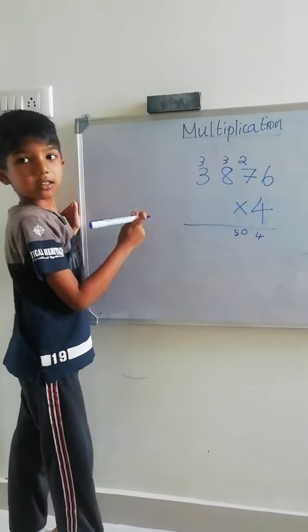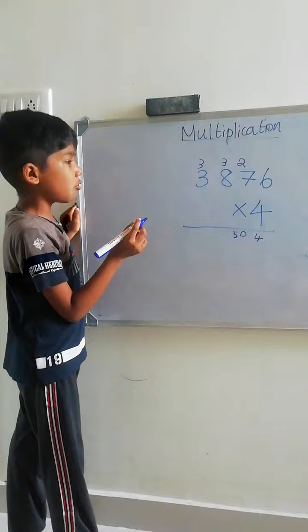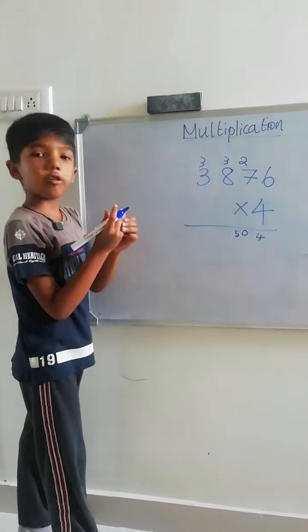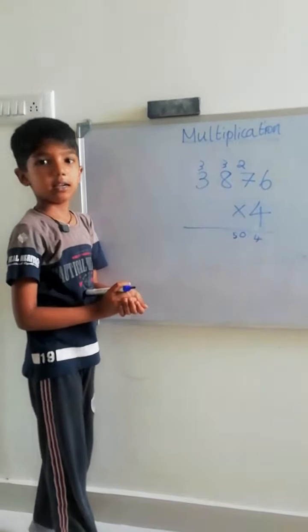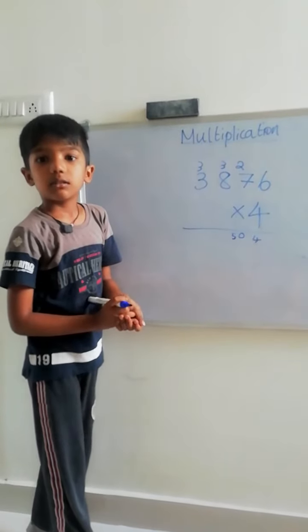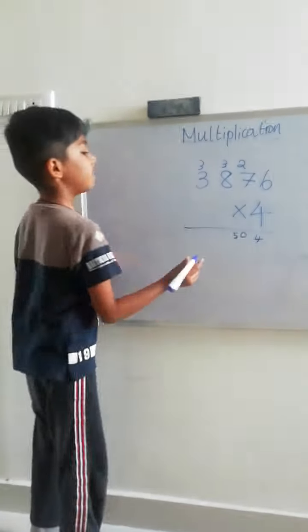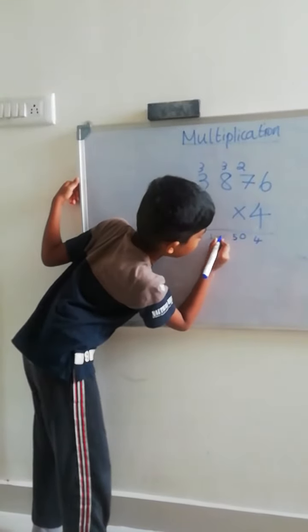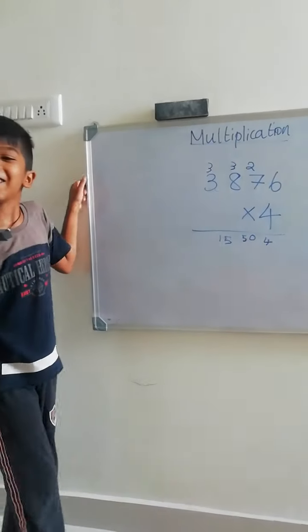4, 3 are 12. In 12, we want to add 3. 13, 14, 15. Here we want to put 15. Trust me well.